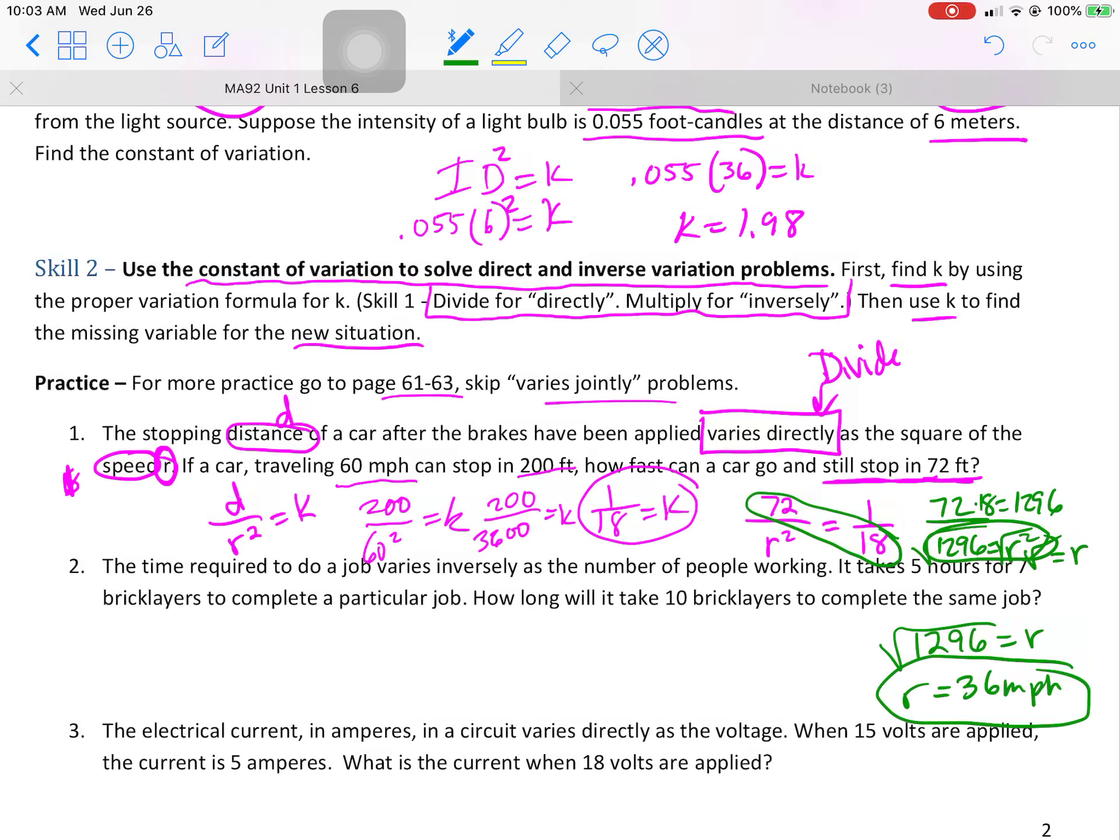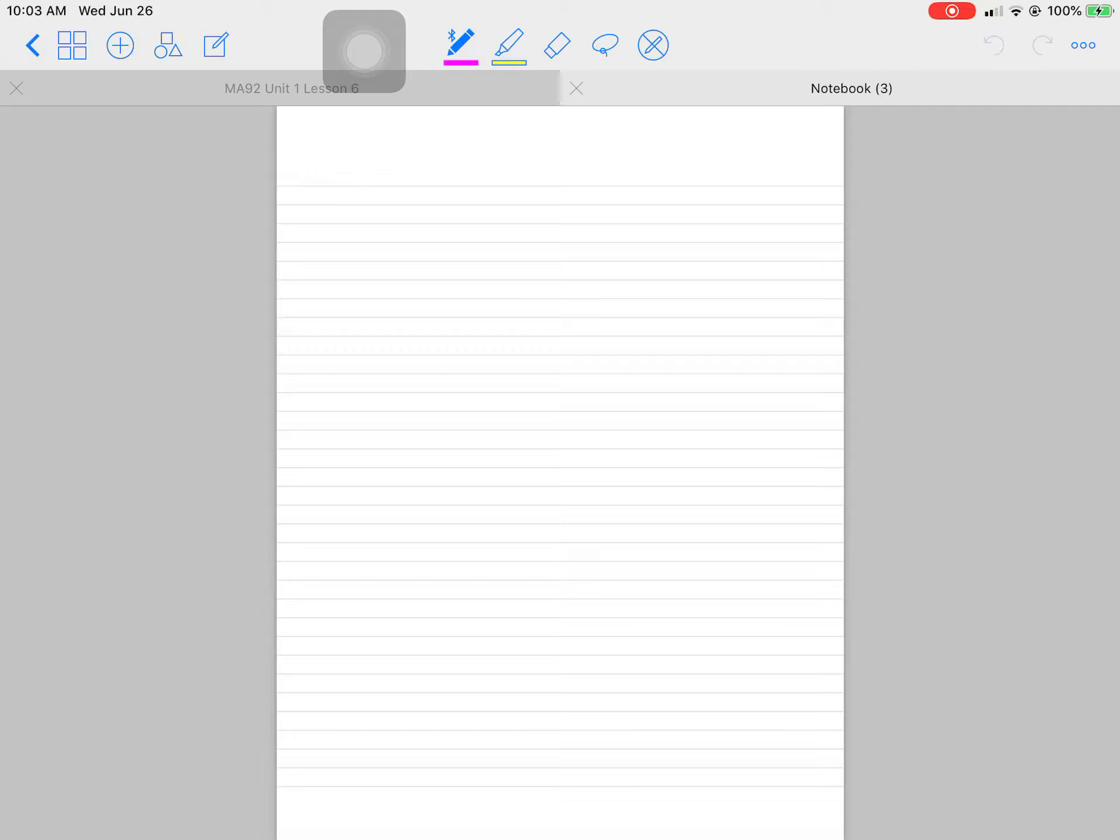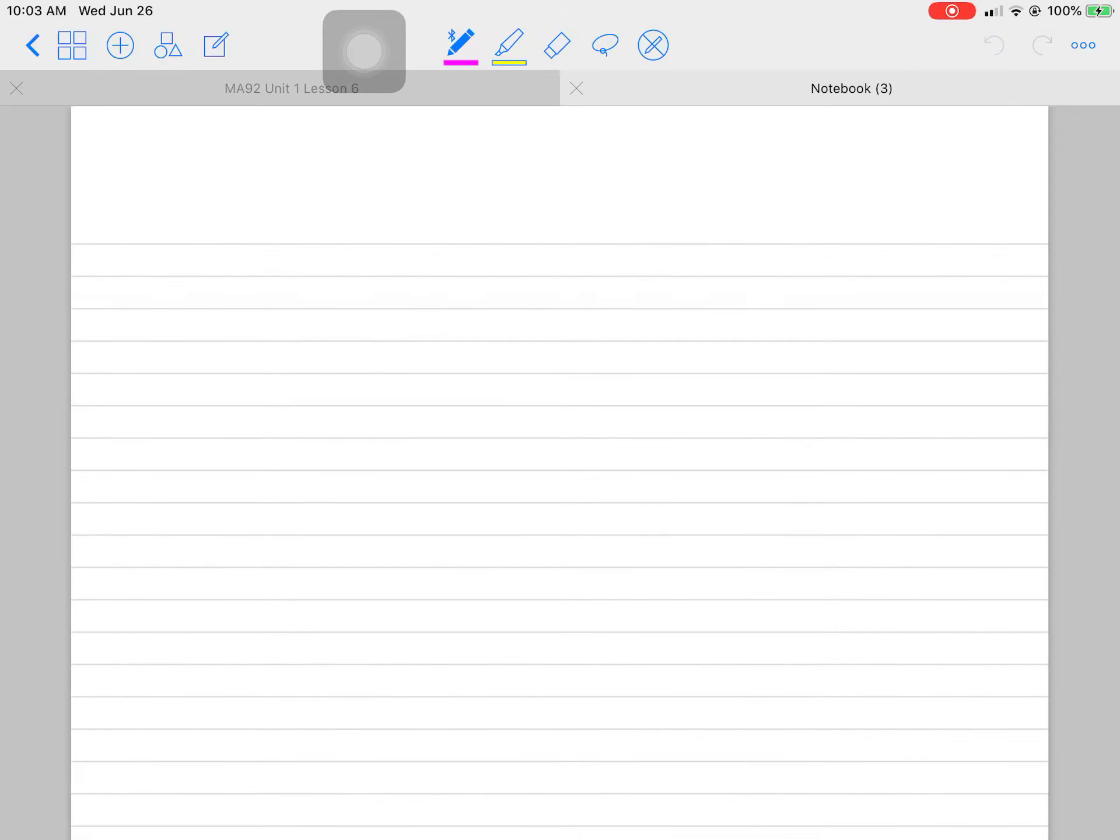Let's see if I can do the next one on a piece of paper here. The time required to do a job varies inversely with the number of people working on it. Well, that sounds reasonable. The time required to do a job varies inversely with the number of people. So varies inversely. That means we're multiplying something. Multiplying the variables.